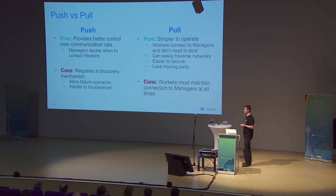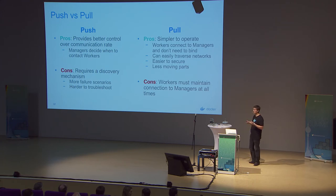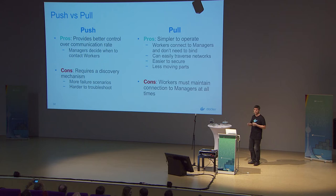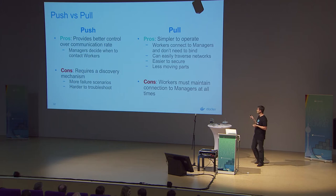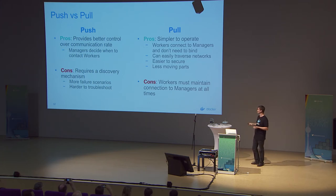The main advantage of push is you get to control the rate of communication — since the manager is talking down, it can decide to dynamically slow down the communication rate or buffer changes more easily, making it easier to scale. The disadvantage is you have to set up something like ZooKeeper, which is an extra moving part in the system. On the pull side, it's much simpler to operate — workers don't need to bind, they just connect — it's easier to secure with no extra ports to open, and you can traverse NATs.